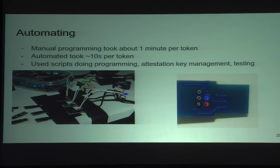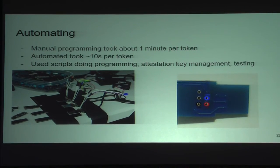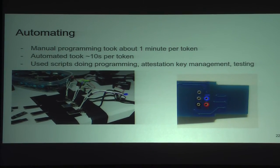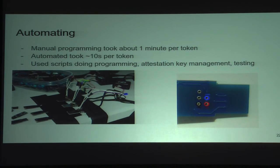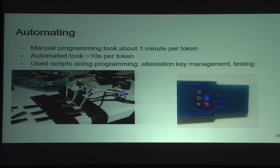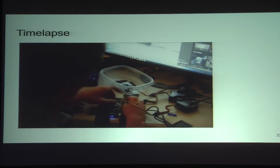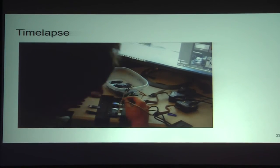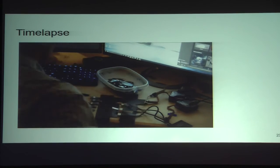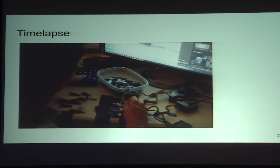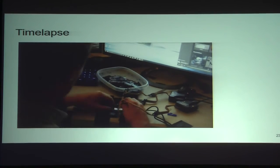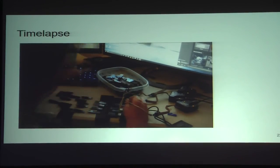After doing the programming on my own, I got the manufacturing order. Manually programming them took about one minute per token, and I didn't want to spend multiple days doing that all day. To automate it, I set up a plug for each one and cranked through all of them with scripts handling programming, key management, and configuration. With three programming stations running in parallel, the whole batch took about four or five hours — enough time to watch two movies.